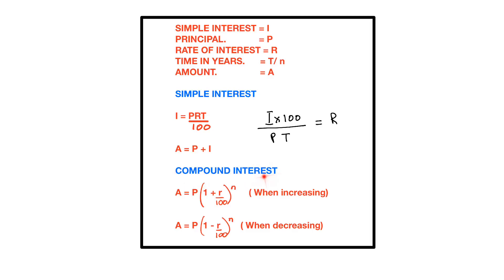For finding compound interest, use the formula A = P(1 + R/100)^N, where P is the principal, R is the rate of interest, and N is the number of years. This is when the amount is increasing; there is also a version when the amount decreases. This formula is also used for non-money related things like population.